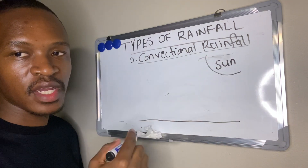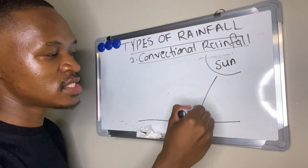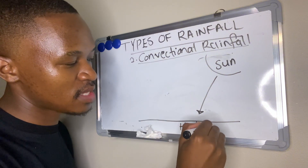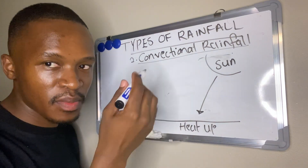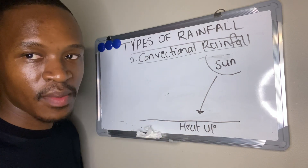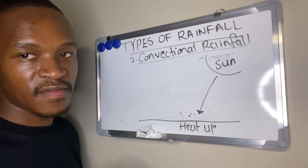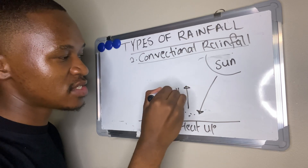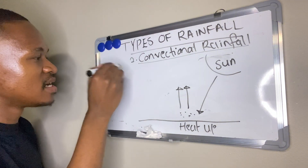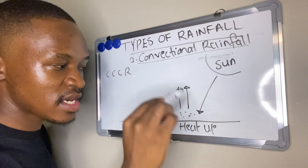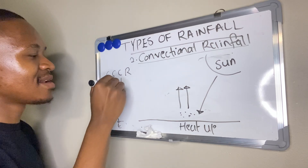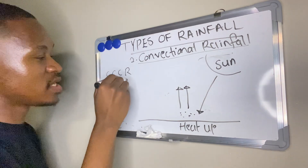It happens when there is high temperature. The sun strikes a surface. Once the surface heats up, the air in contact with that surface will also warm up. We end up with warm moist air above the surface, and that moist air rises. Once moist air rises, we have the Triple C-R process: the warm moist air rises, cools, condenses to form clouds, and clouds bring about the rainfall.